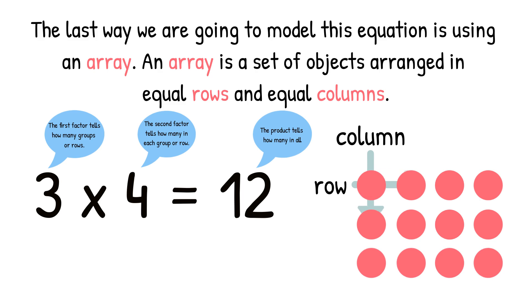And the way we find the product, the answer to this multiplication equation, is we can skip count the rows. So we know there's 4 in each row. So let's skip count each row: 4, 8, 12. 12 is our product.